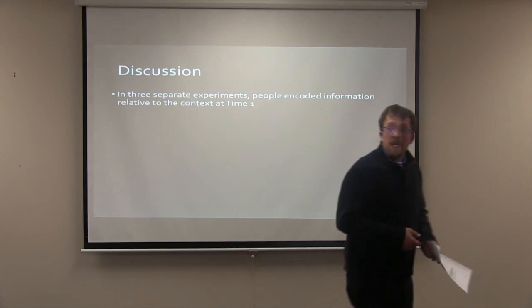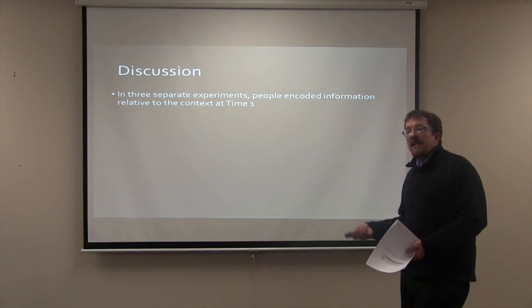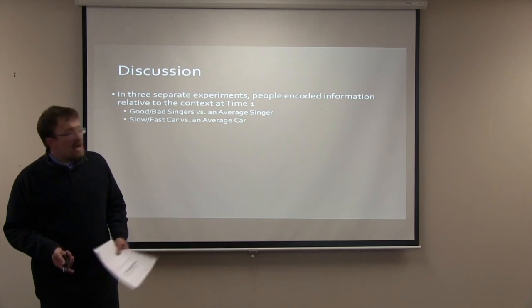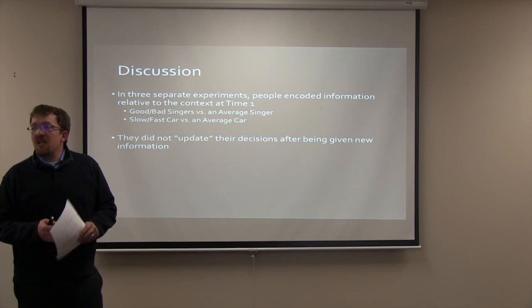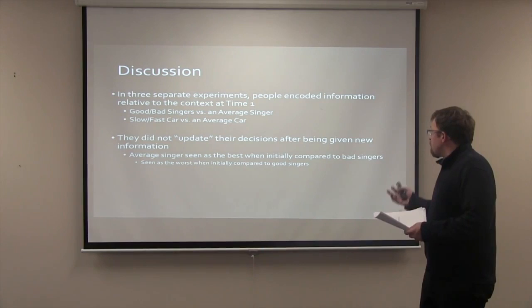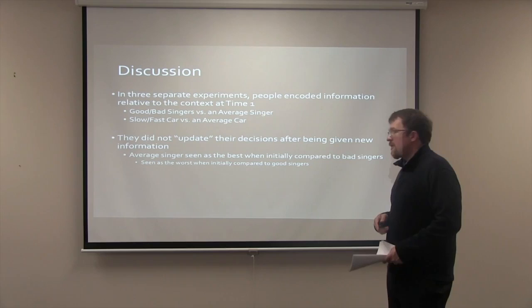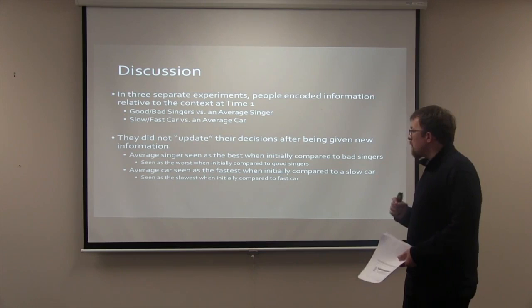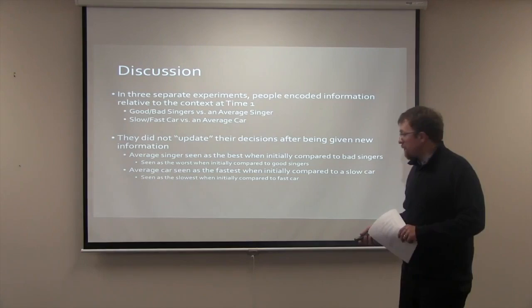Across three separate experiments, people encoded information relative to the context of time one. For example, the average singer was presented with either a very good or very bad singer at time one, or a moderately fast car was paired with either a slower or faster car at time one. Across all three studies, the researchers found that participants would not update their evaluations after being presented with new information. Specifically, the average singer was seen as the best when initially compared to bad singers, but as the worst when initially compared to good singers, despite new information at time two. Similarly, the average car was seen as the fastest when initially compared to a slower car, but the slowest when initially compared to a fast car.